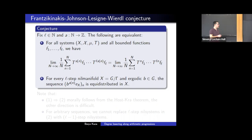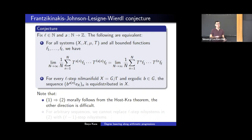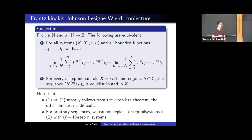Why should this be true? For the implication that the identity implies equidistribution, morally this is a consequence of the Host-Kra structure theorem, which allows us to reduce to ZL factors and then to L-step nilsystems. What's difficult is the second implication: showing that equidistribution implies the identity. An important observation is that for arbitrary sequences we cannot replace L-step nilsystems with (L−1)-step nilsystems, because of examples like those coming from degree-(L+1) polynomials.